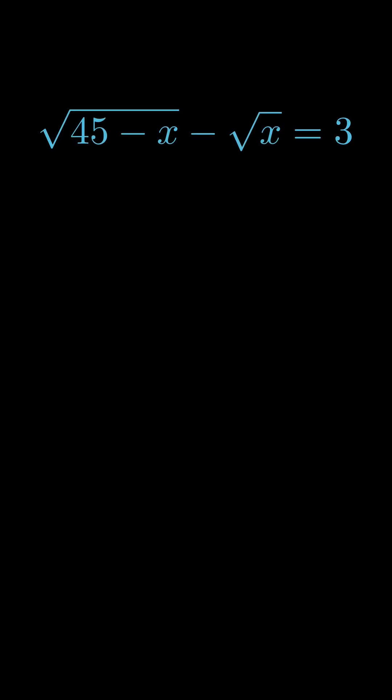One of the famous SAT traps: square root of 45 minus x minus square root of x equals 3. At first glance, it looks nasty. So let's play detective. Step 1: try plugging in the answers.